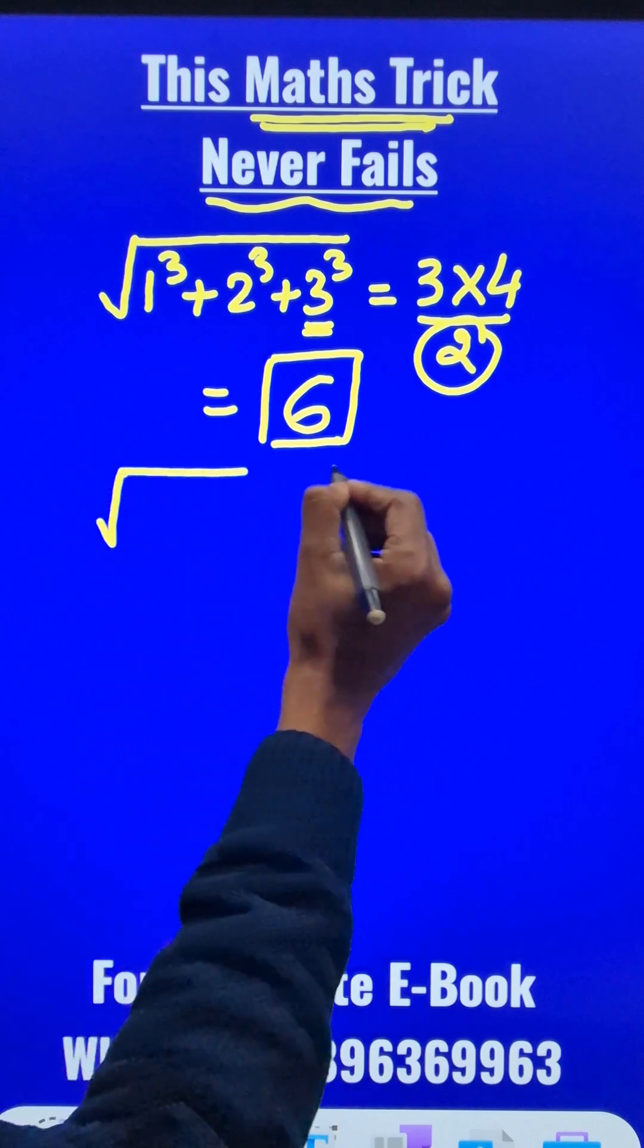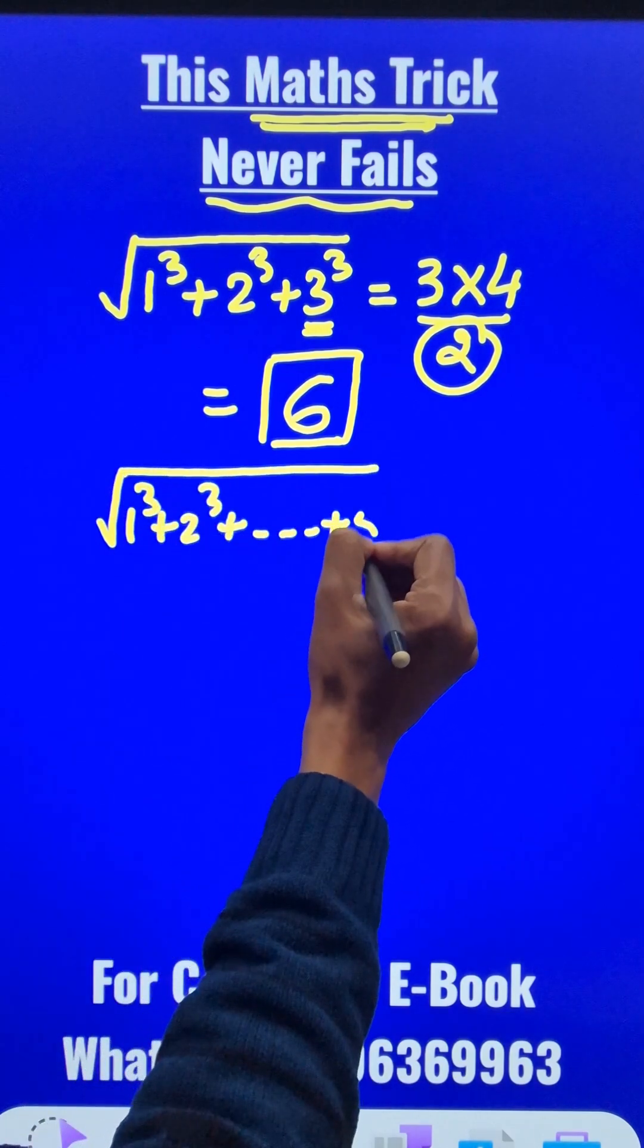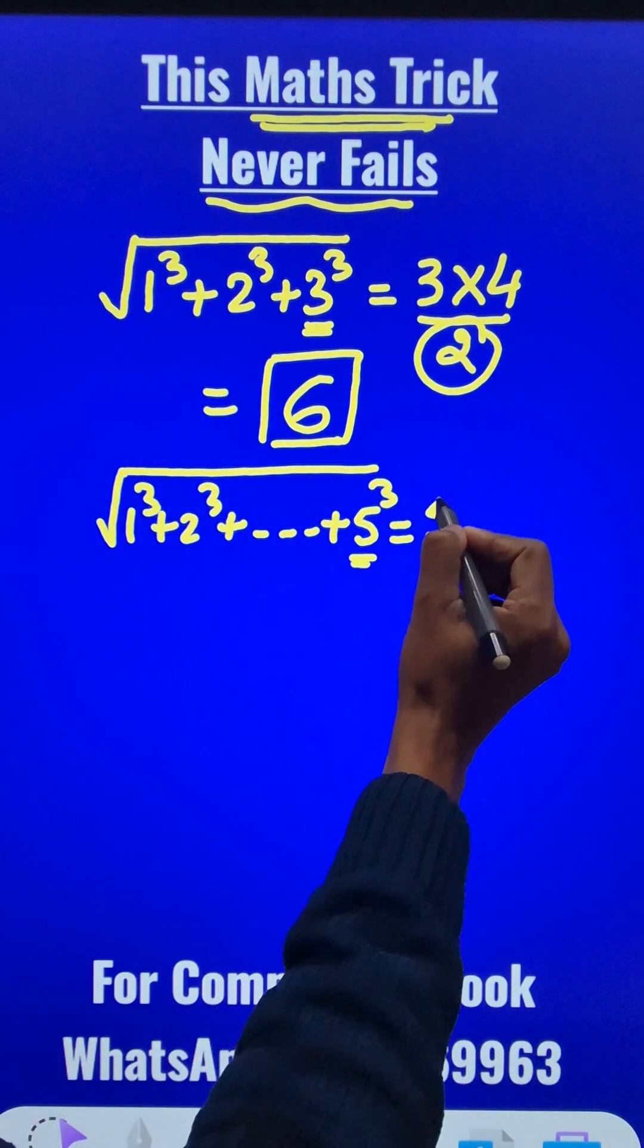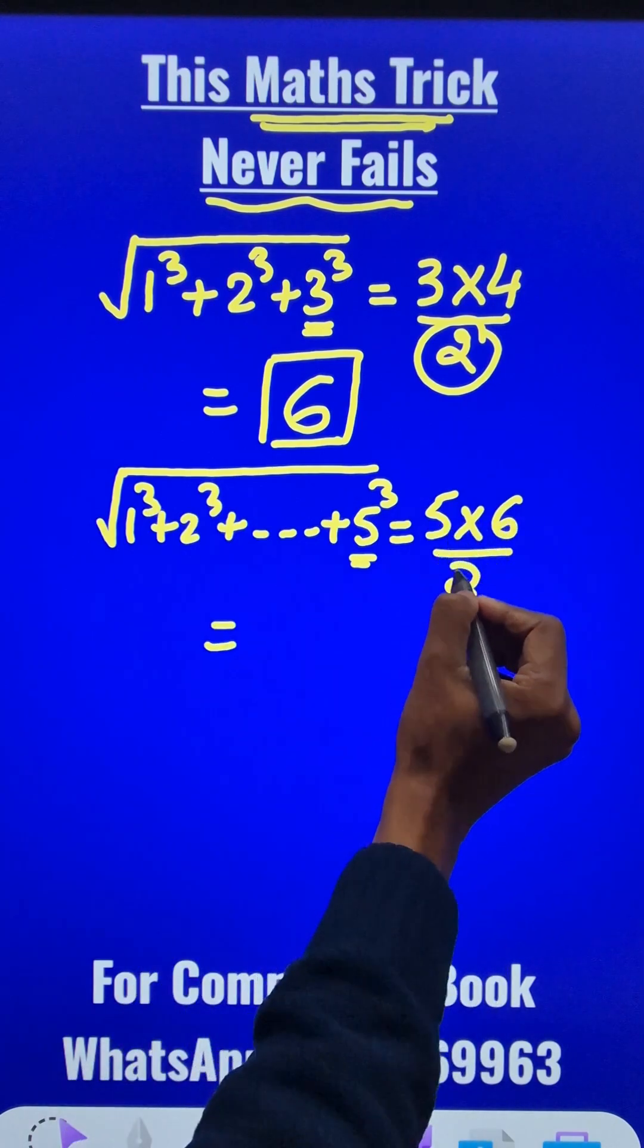Let's find the sum of 1³ + 2³ up to 5³. What will be the answer? You can do it in 2 seconds. The last number is 5, multiply by the next number 6, divide by 2. 30 ÷ 2 = 15.